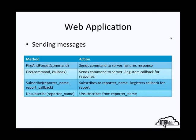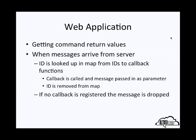For getting command return values, when a message arrives from the server, the ID is looked up in a map from IDs to callback functions. If no such ID is registered, the message is dropped. If an ID is registered, the callback is called with the message as a parameter. I may change my system so that fire-and-forget messages indicate they don't expect a reply, which should save some bandwidth and computation on the engine side.